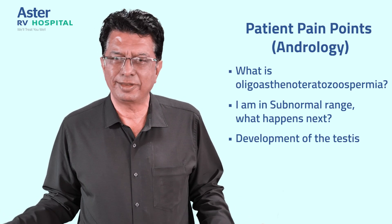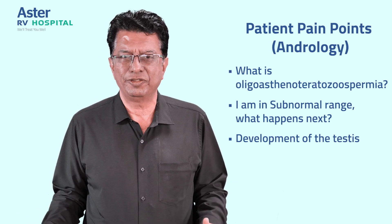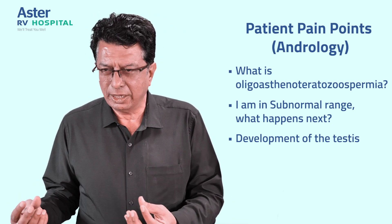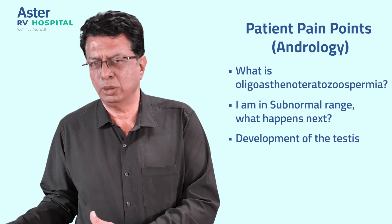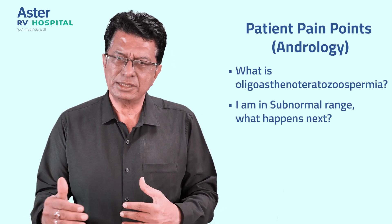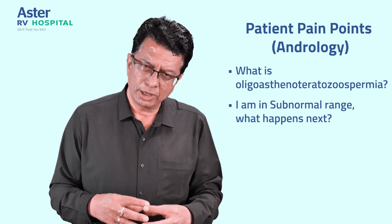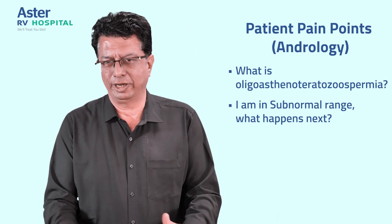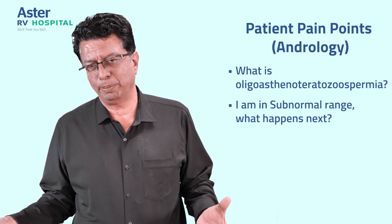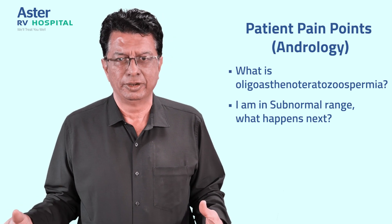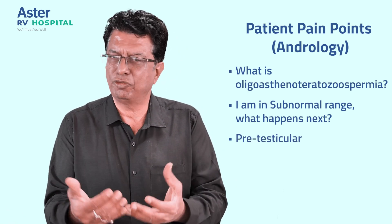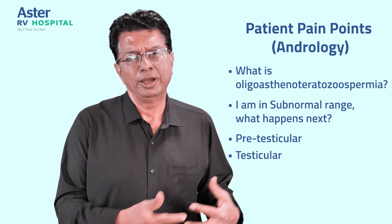Second is the development of the testis. All of us are not born equal — our heights are not the same, our left and right arm may be slightly dissimilar. Similarly, testis size and penis size are not the same for everyone. There could be a discrepancy in development, and your testicular size may be smaller or inadequate. This is assessed by a simple ultrasound or physical examination. On this basis we classify the problem as pre-testicular, testicular, or post-testicular.